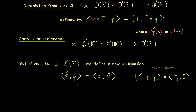We also see that the check operation for test functions is just a reflection, so it will not change the size of the support of the test function — only the location can change. This means that s.check also has compact support; the location of the support might be different, but it is definitely also a bounded set in R^n. So this is really important to remember: we stay inside the distributions with compact support.